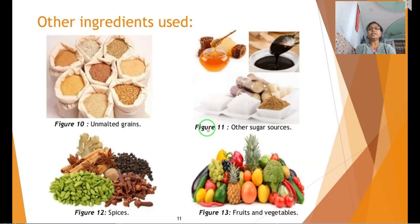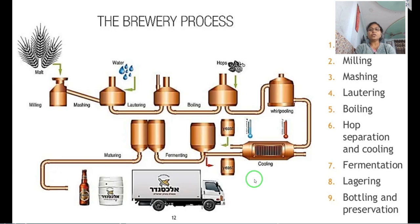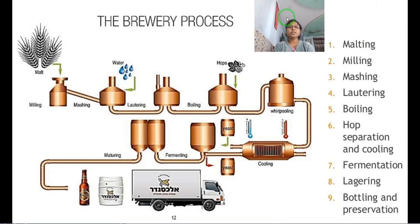Other ingredients used in beer include unmalted grains, spices like cardamom, cinnamon, black pepper, ginger and cloves, as well as other sugar sources like honey to enhance aroma and flavour. Vegetables and fruits can also be used to impart a particular flavour to a specific beer. Now we are going to look at the brewery process and how beer fermentation is carried out.